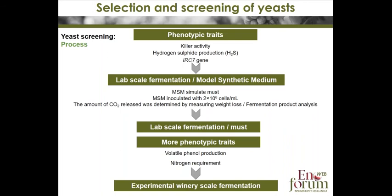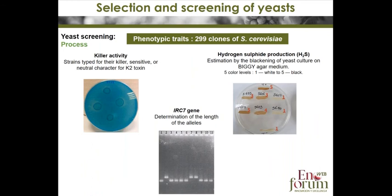All these tests allow us to select the most efficient yeast for experimental winery-scale fermentation. For this study, we characterized around 300 clones of Saccharomyces cerevisiae. Yeasts were screened for killer activity on methylene blue media plates, where yeast colonies with killer activity were identified by a clear zone around the colony.